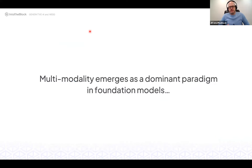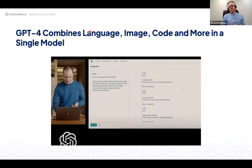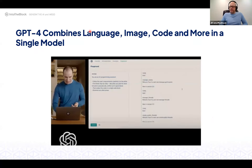All these emergent properties led to a transition from models that do language, or computer vision, or audio — to models that can do many things simultaneously. That's GPT-4, which combines language, image, coding, and many other capabilities in a single model.